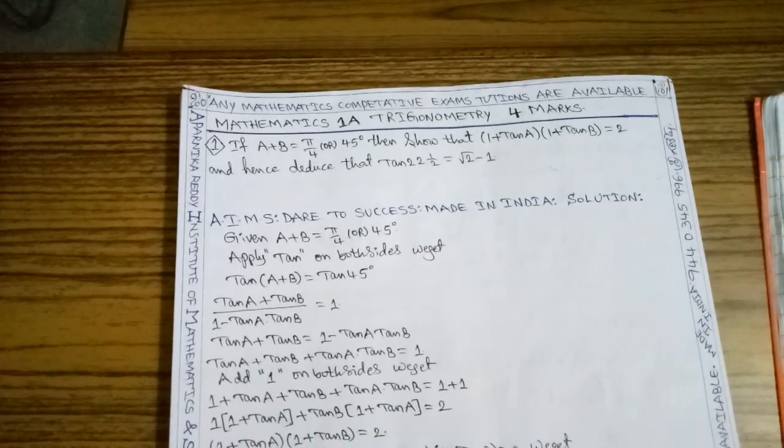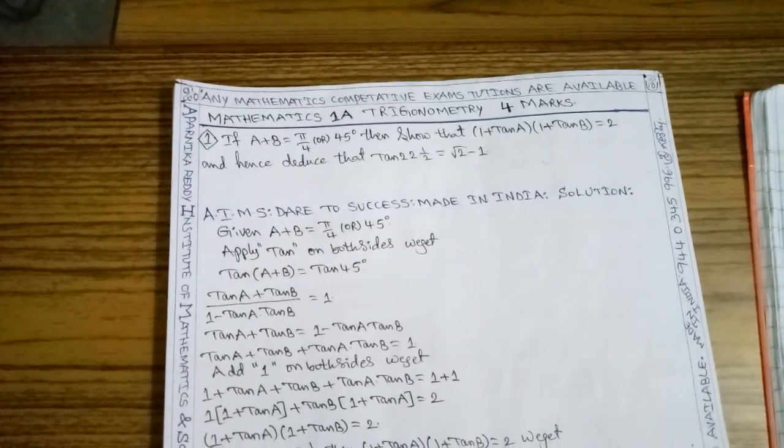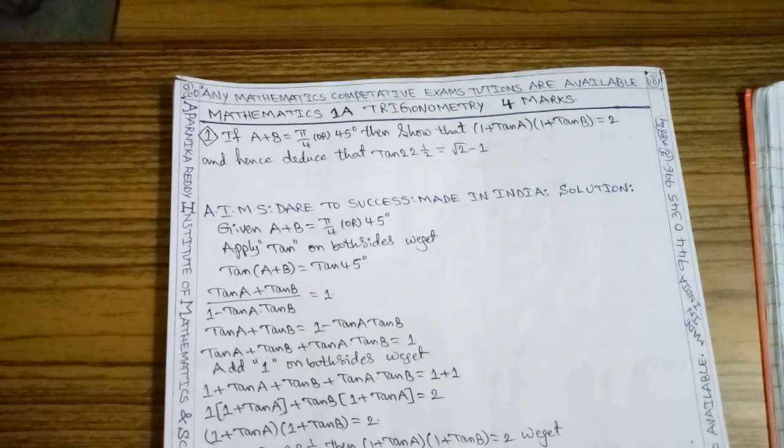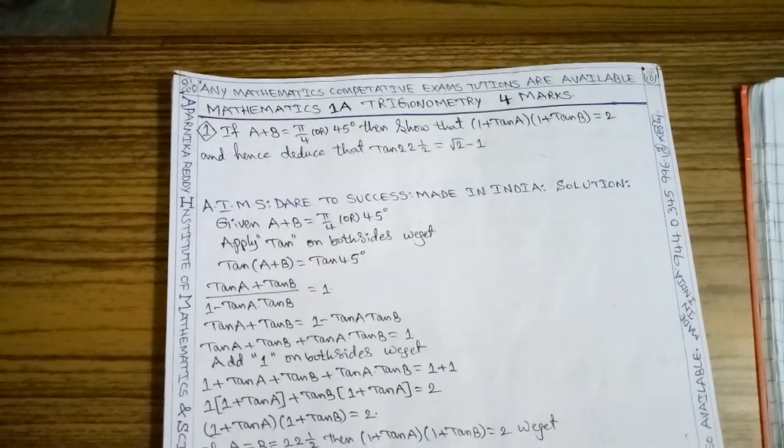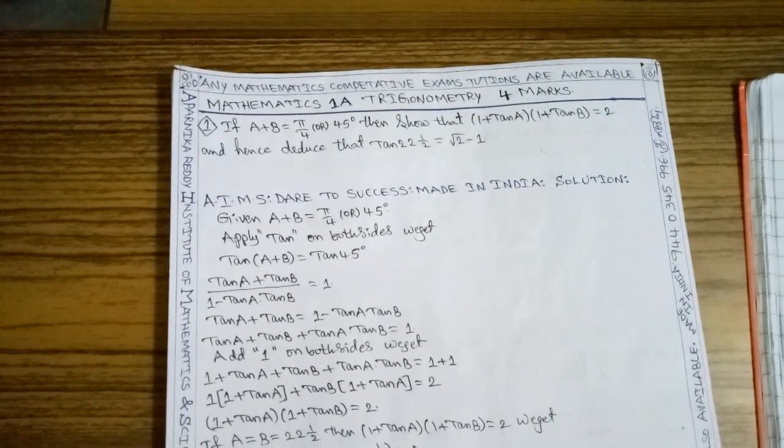If A plus B is equal to 45 degrees, then show that (1 plus tan A) times (1 plus tan B) is equal to 2. And hence deduce that tan 22.5 degrees is equal to root 2 minus 1.